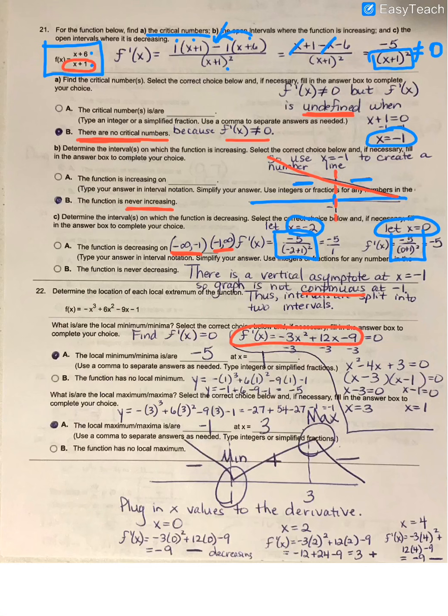Once again, I noticed everything was divisible by negative 3. So by dividing everything by negative 3, it just gives me something that is much easier to factor. And when I factor that, I get factors of x minus 3 times x minus 1. Set those factors individually equal to 0, and my critical numbers end up being 3 and positive 1.